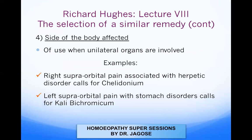The fourth point is the side of the body affected, which is of use when unilateral organs are involved. For example, right supraorbital pain associated with herpetic disorders calls for Chelidonium, whereas left supraorbital pain with stomach disorders calls for Kali Bichromicum.